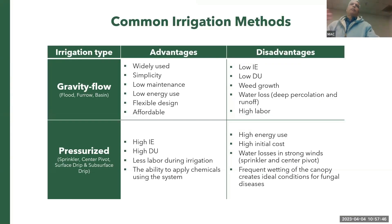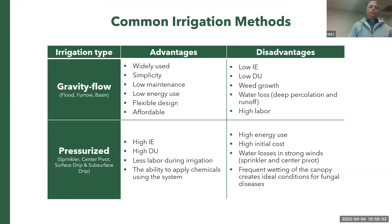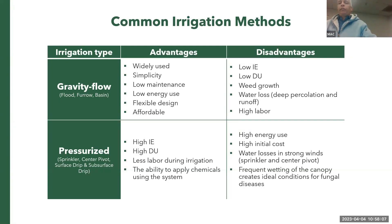Common irrigation systems include flood irrigation and pressurized systems like sprinkler, center pivot, and subsurface drip. For pressurized systems, the main advantages are higher irrigation efficiency, higher distribution uniformity, less labor, and the ability to apply chemicals through the system.